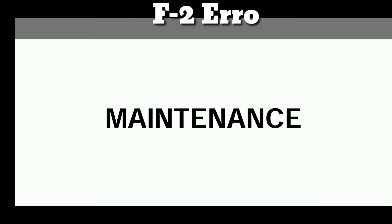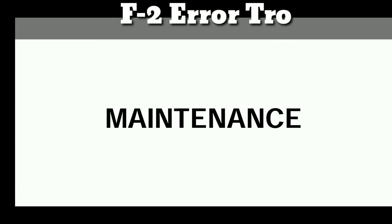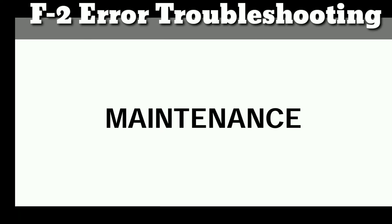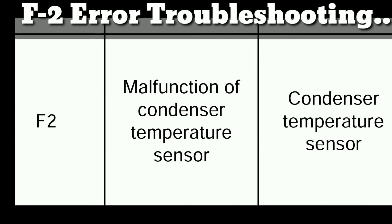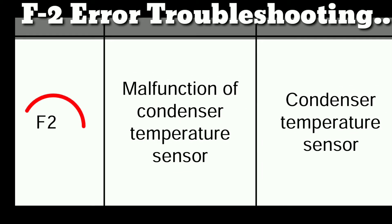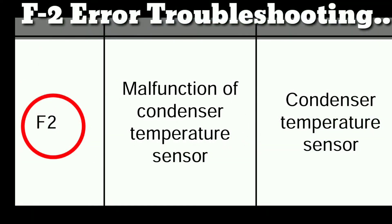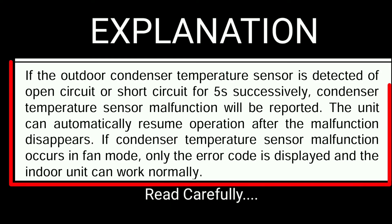Today we want to talk about the F2 error in Gree inverter air conditioner. The F2 error is for the condenser temperature sensor. If your condenser temperature sensor is broken, as you can see on the display, this is the tube sensor, also called the condenser sensor or condenser temperature sensor. The value of the condenser temperature sensor is 50 kohms.